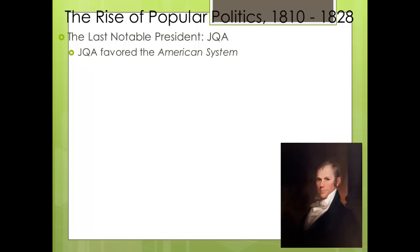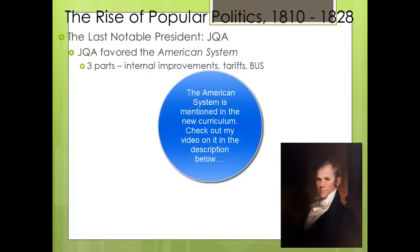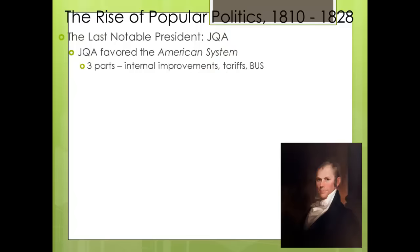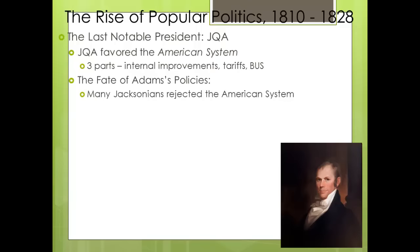John Quincy Adams's presidency is really marred by the corrupt bargain, as is Henry Clay's political career going forward. Adams endorsed Henry Clay's American System, which was comprised of three parts: internal improvements like roads, canals, and eventually railroads; tariffs; and the Bank of the United States. Many Jacksonians in Congress rejected the American System — this tension continues into the presidency of Andrew Jackson.